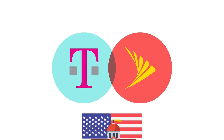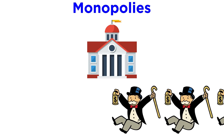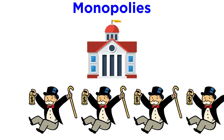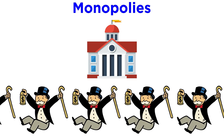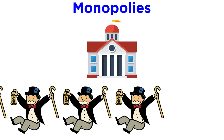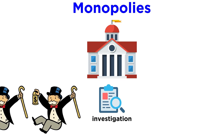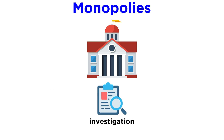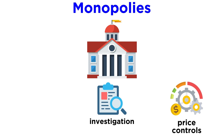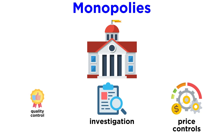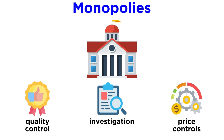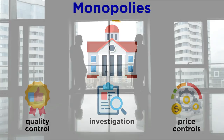So, as we can see, governments often let some monopolies exist, even creating some themselves. This doesn't mean that they don't regulate them. The government may investigate abuse of monopoly power to make sure trade is fair. It may create price controls to make sure corporations don't take advantage of consumers. And finally, it may regulate the quality of goods and services provided by a monopoly.